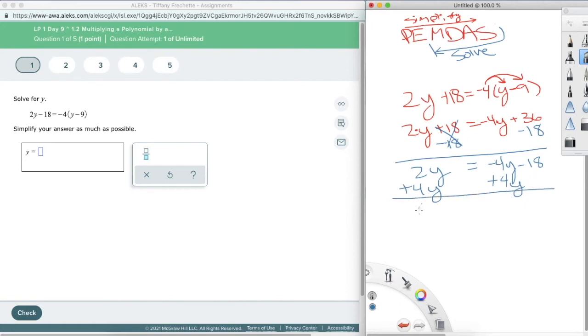So now I have 6y equals negative 4y plus 4y. One's negative, one's positive, and they are identical, so they do cancel. And negative 18 just drops down here. Now I can move to multiplication or division. So I'm multiplying by 6 with the variable, so I'm going to divide by 6. 6 divided by 6 cancels down to 1. Negative 18 divided by 6 gives me negative 3. So now I know what y equals. y is negative 3.